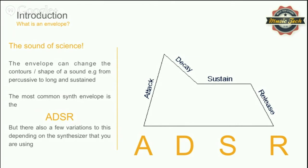The ADSR changes the shape of your oscillator — we looked at oscillators last week. But keep in mind it can also be used to route other things; for instance, you can use an ADSR on a cutoff filter parameter, which is fantastic. The shape of the envelope starts with the attack, moving on to the decay, then the sustain, then the release. It's a time parameter. Attack is how many milliseconds before decay cuts in, then how many milliseconds before sustain cuts in. The sustain stays on until the note is released, then the release takes over — also measured in milliseconds.